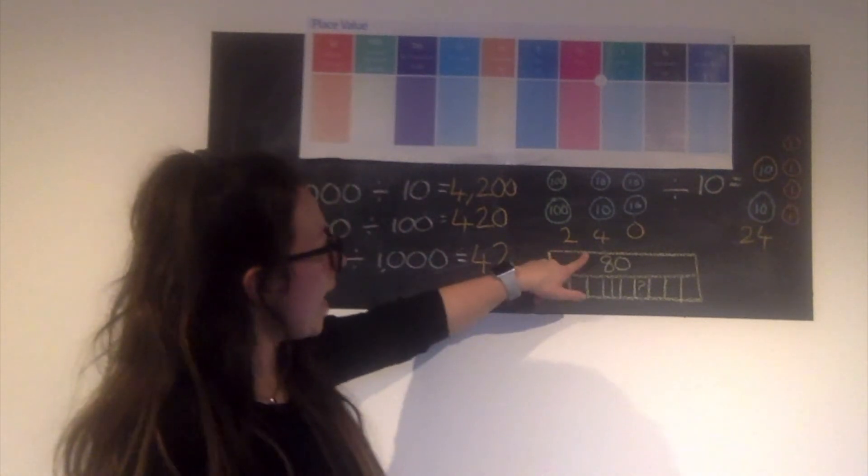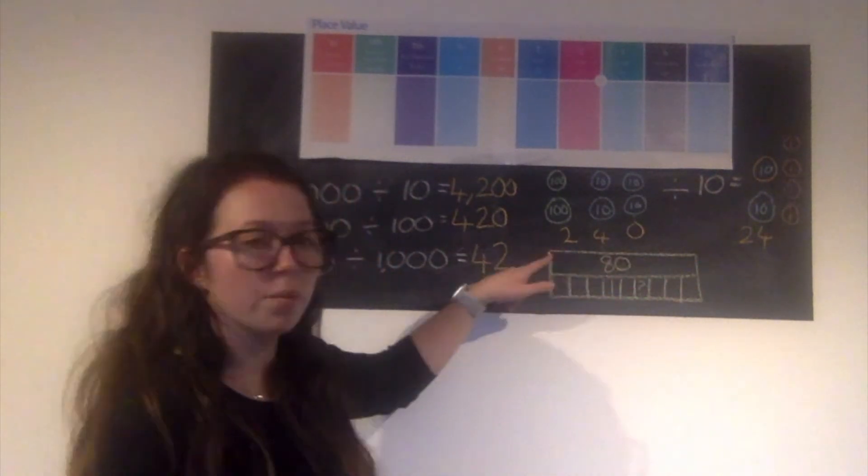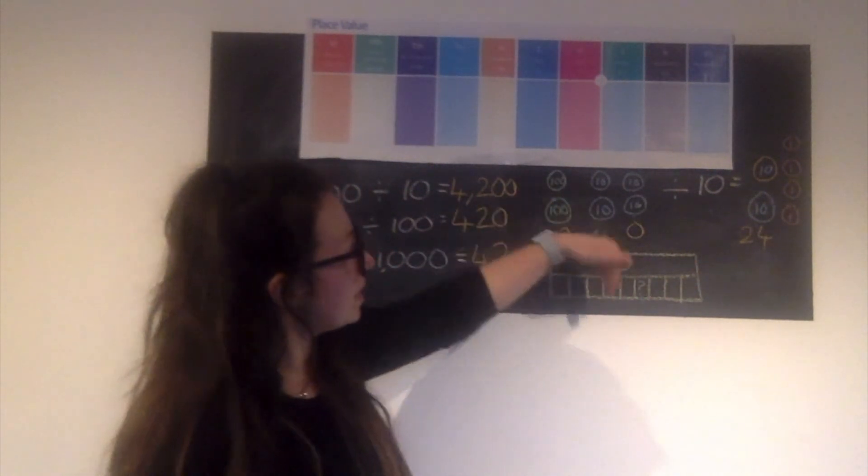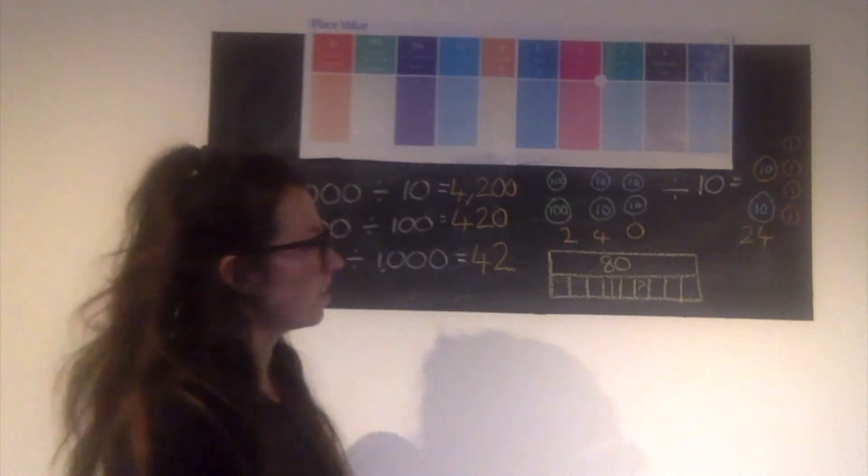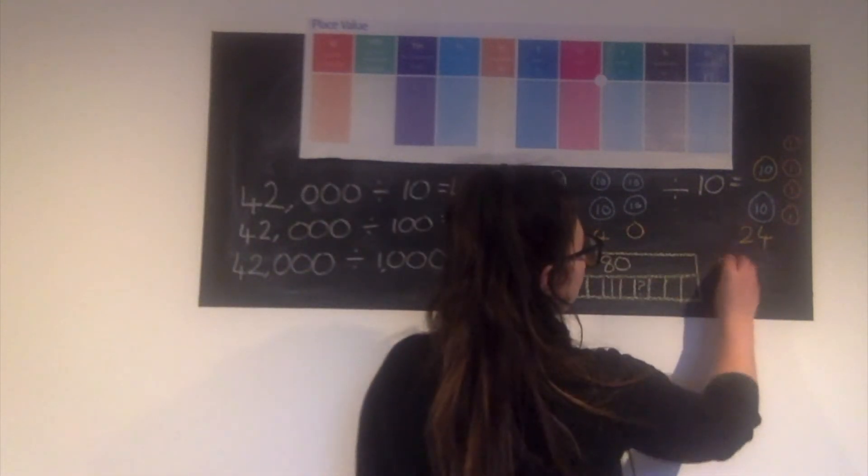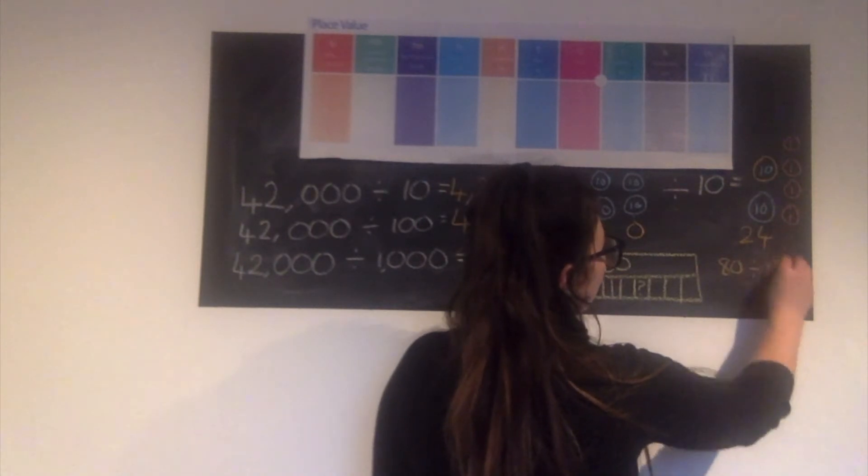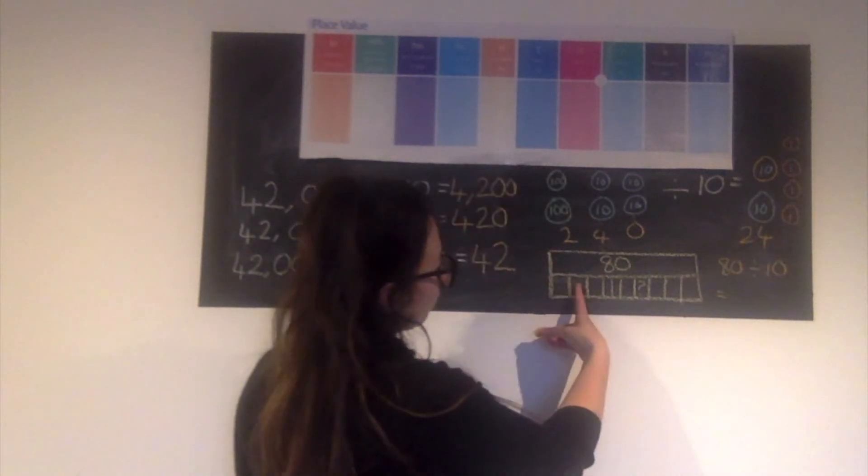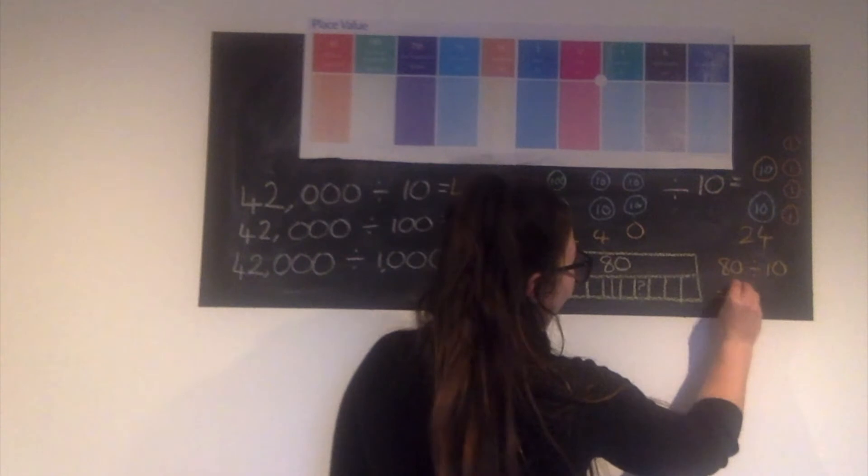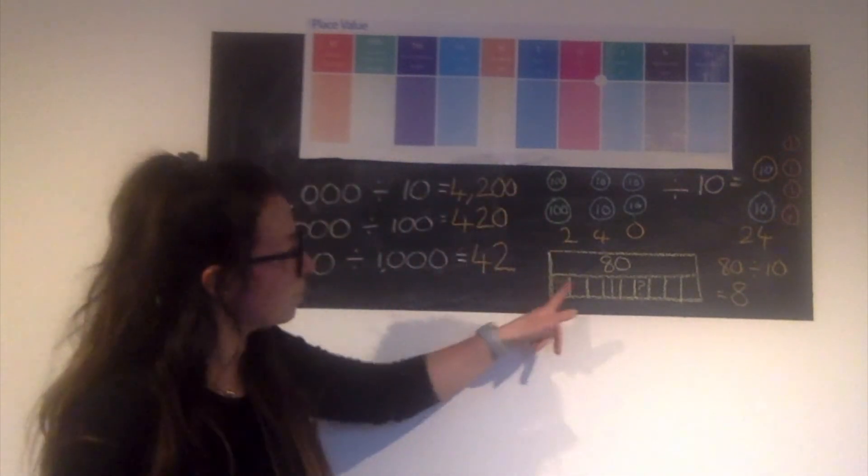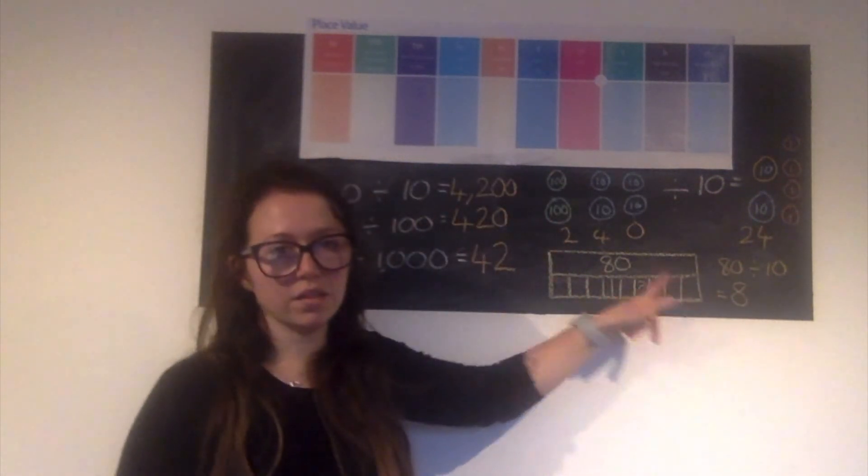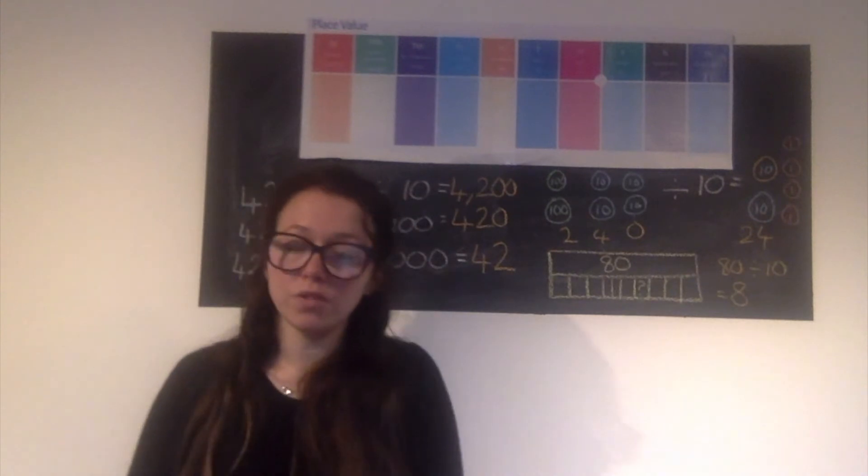Now the next one: 80 was my whole on the top of my bar, and I wanted to split it into 10 equal pieces. So my number sentence was 80 divided by 10. Hopefully we realize that each of these would be worth 8. If you count up in 8s, 10 lots of 8 gives me 80. Well done if you got those.